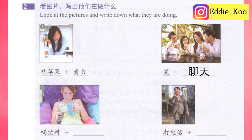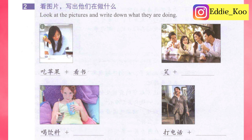Picture 3 — 喝饮料，drink beverage，plus 看电视，watch TV. Picture 4 — 打电话，to make a call，plus 走路，walk.